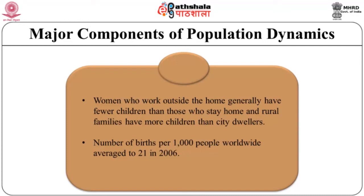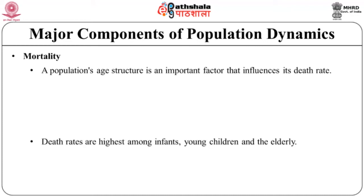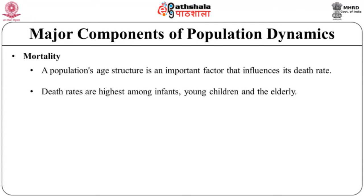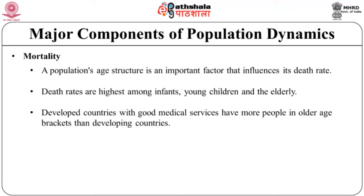In his Essay on the Principle of Population, T.R. Malthus compared his contemporary European society with less developed ones regarding what he termed positive checks on fertility and mortality. A population's age structure is an important factor influencing its death rate — death rates are highest among infants, young children and the elderly. Societies with many elderly people are likely to have more deaths per thousand people than those where most citizens are young adults. Developed countries with good medical services have more people in older age brackets than developing countries.